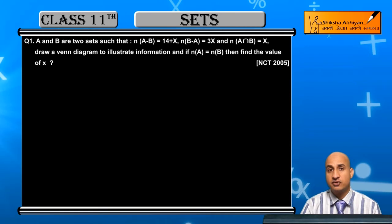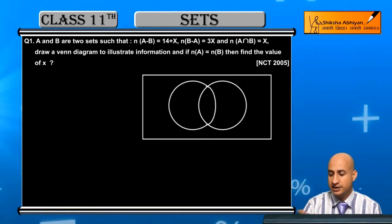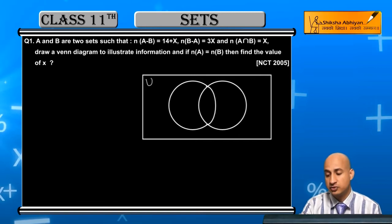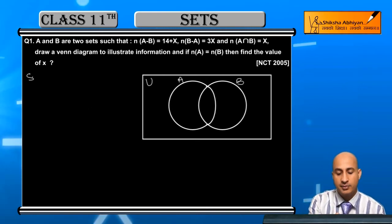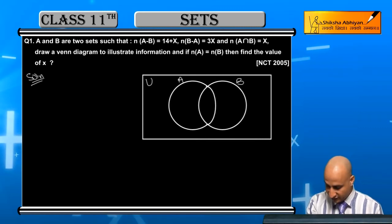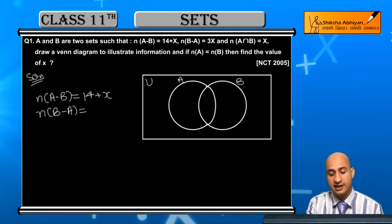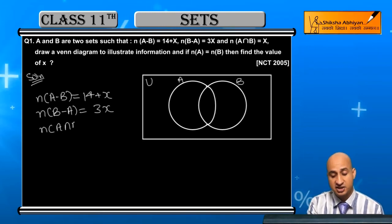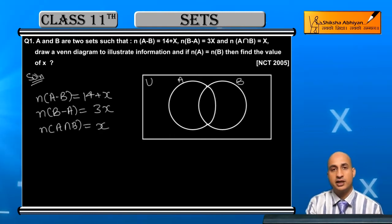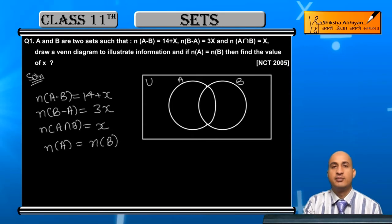First of all, let me write what is given here before filling the Venn diagram. Given is: number of elements in A minus B is equal to 14+x, number of elements in B minus A is equal to 3x, and also given number of elements in A intersection B is equal to x. Also, the information given is that number of elements in A equals number of elements in B.